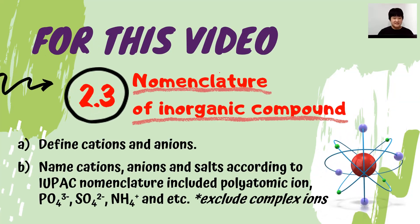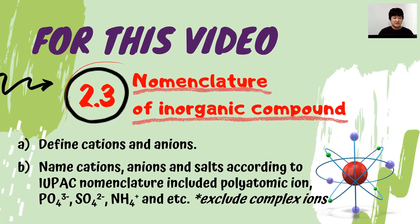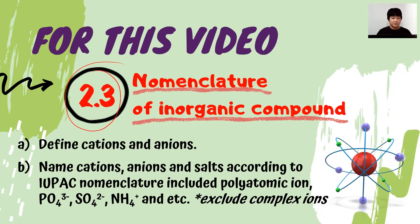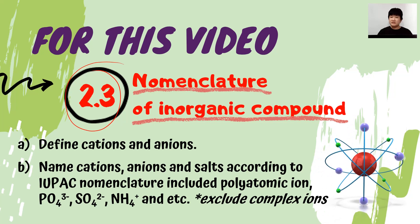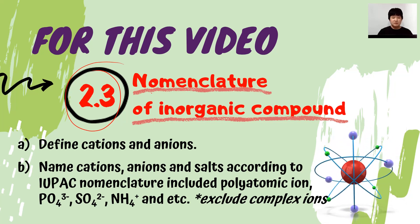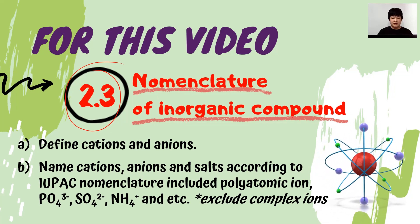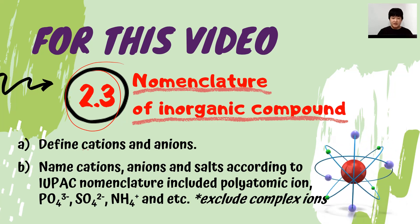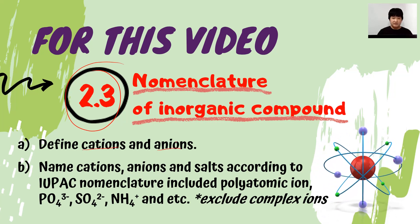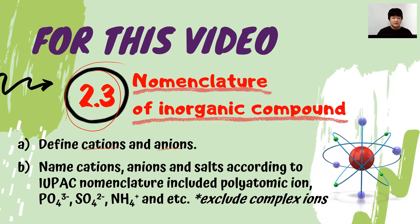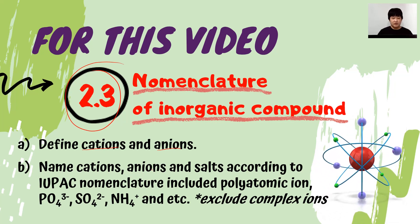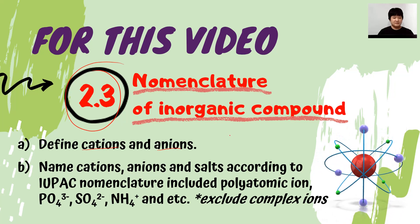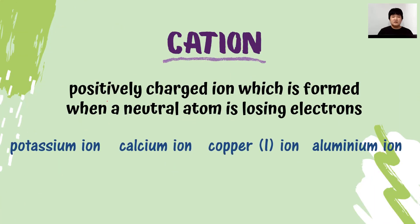Hello, welcome back. We will continue and finish topic 2 — this is the last subtopic of topic 2, a very simple topic where we will talk about nomenclature of inorganic compounds. We'll define cation and anion, which we have learned in section 2.1, and we are also going to look into how to name the cation, anion, and the salt.